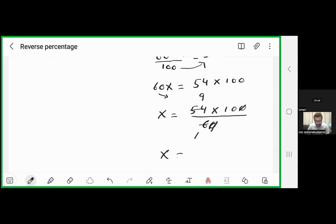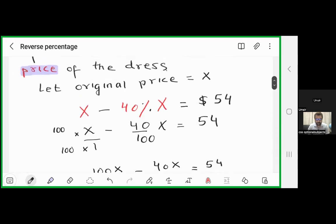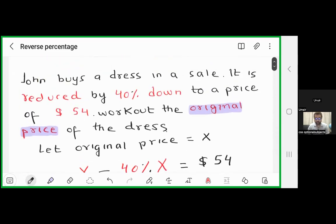So x which is original price will be 9 into 10, that is $90. This is the solution of this question. In this way you can find the original price of any quantity given. Thank you so much.